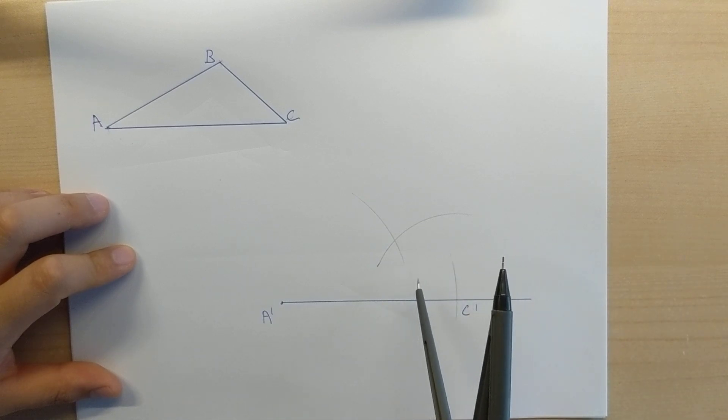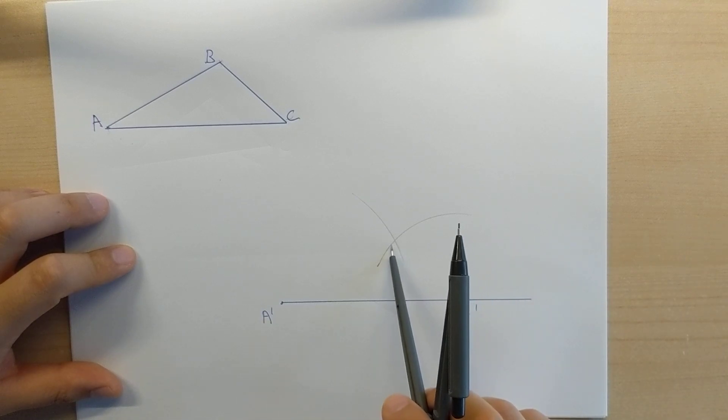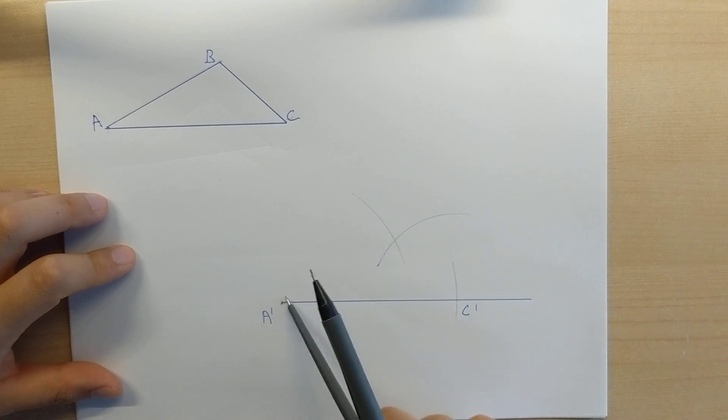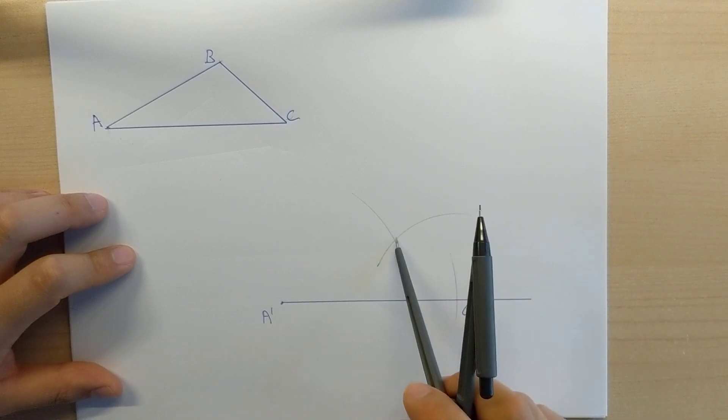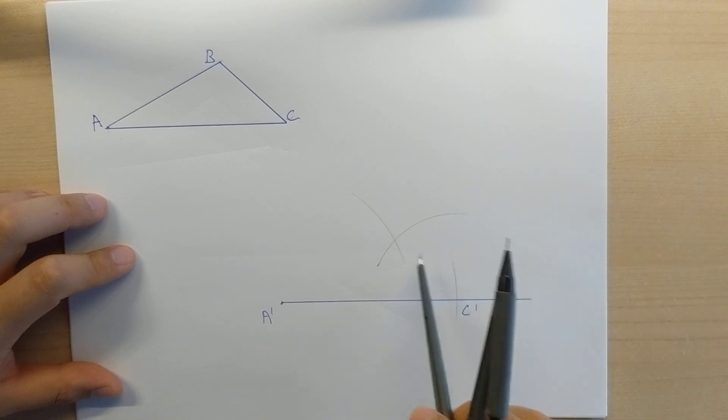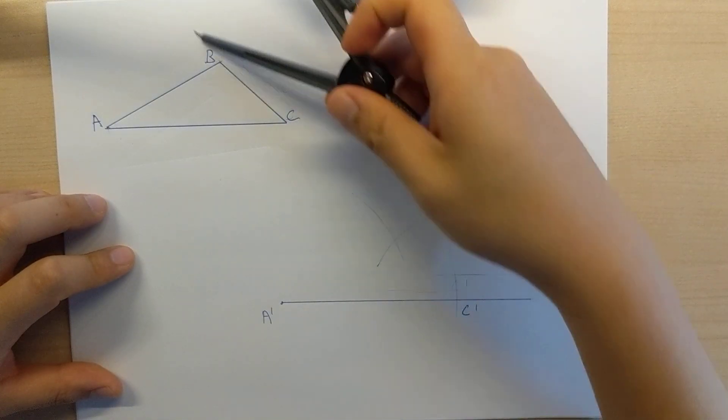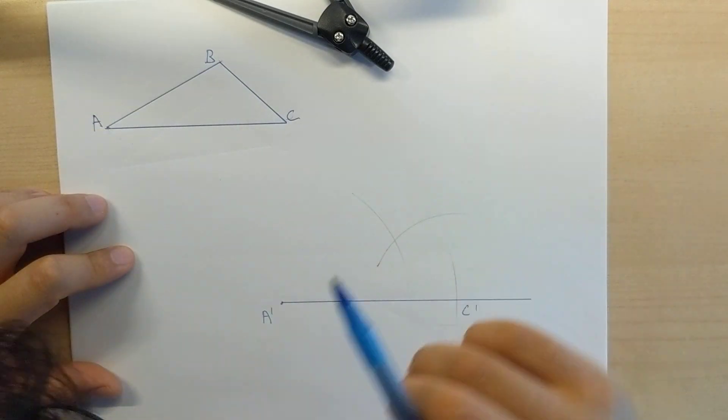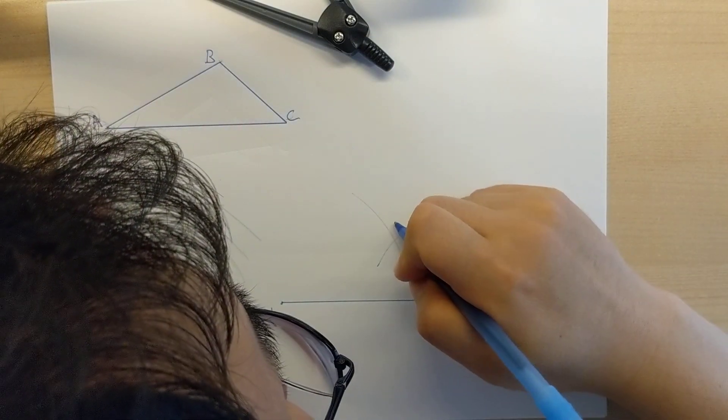So, the significance of this, this point right here is going to be a distance of AB away from A prime. And at the same time, it will be a distance of BC away from C prime. So, this point, that intersection, I will call B prime.